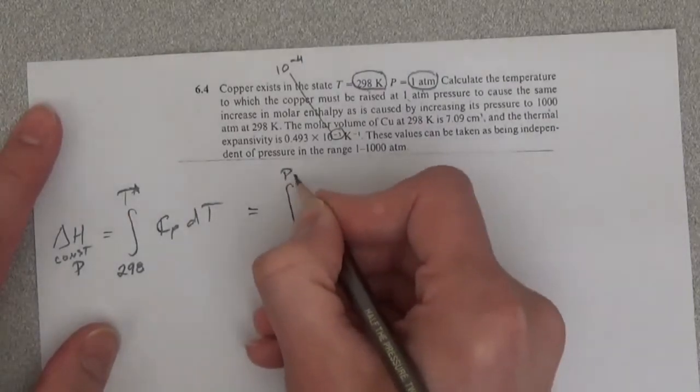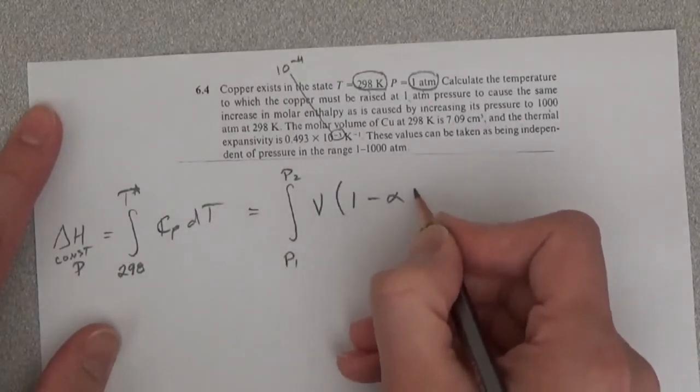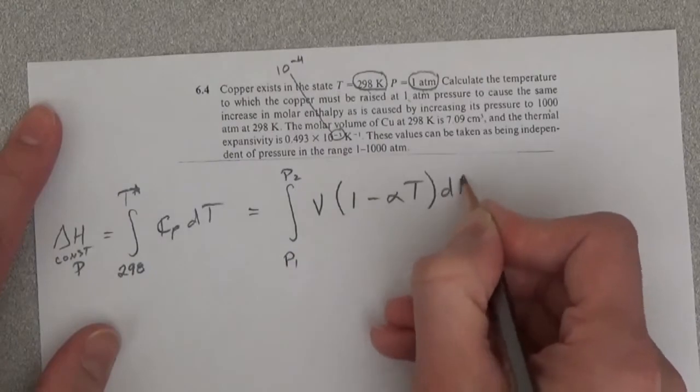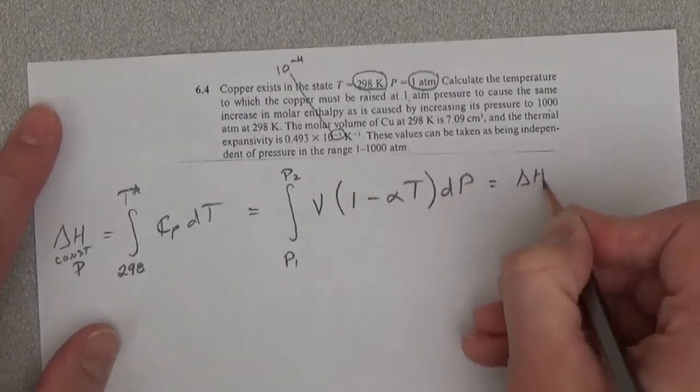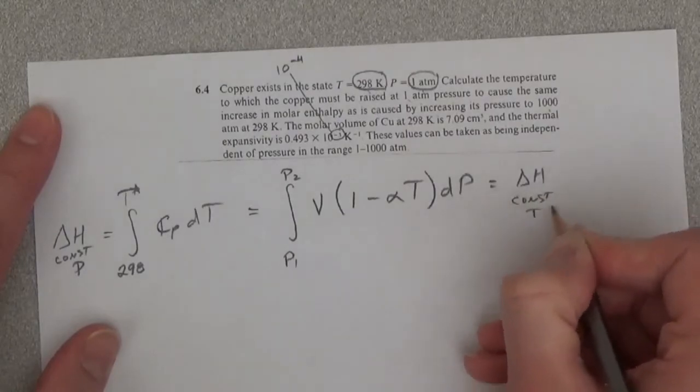The integral from P1 to P2 of V times (1 minus alpha T) dP equals delta H at constant temperature.